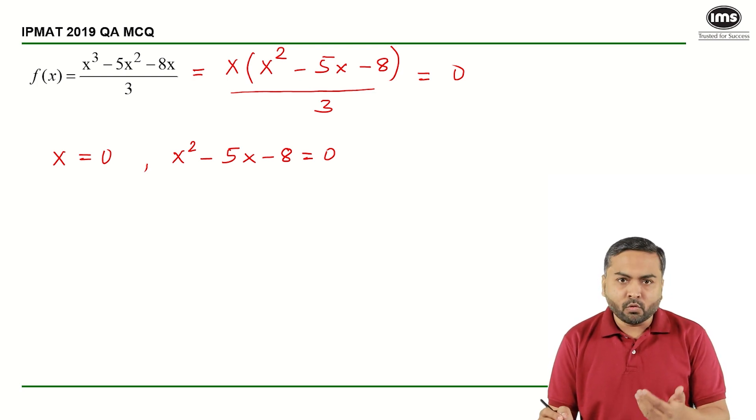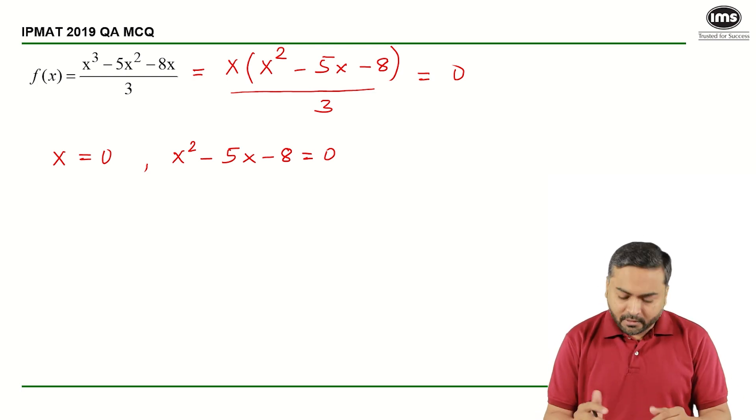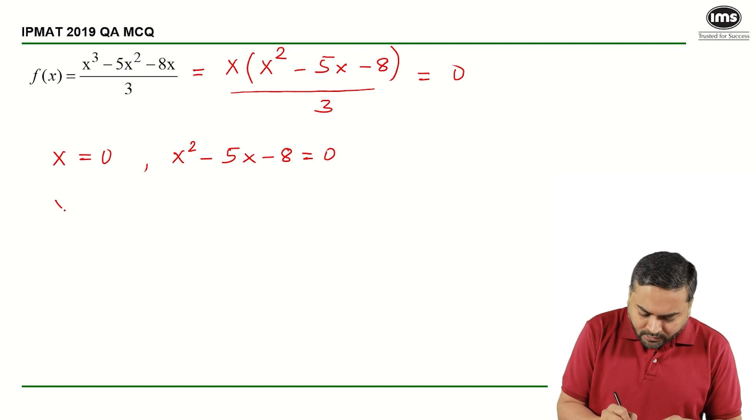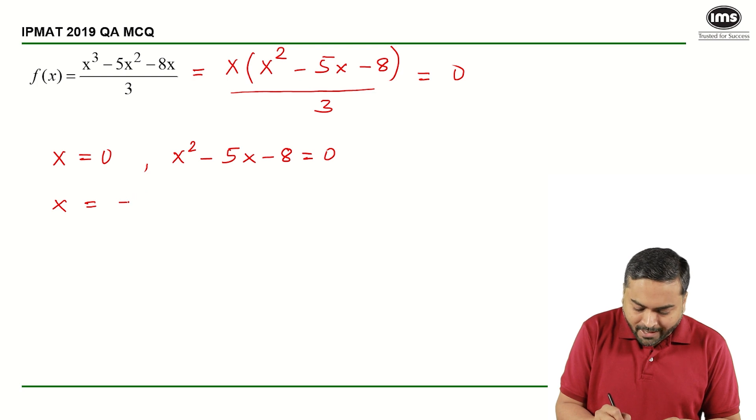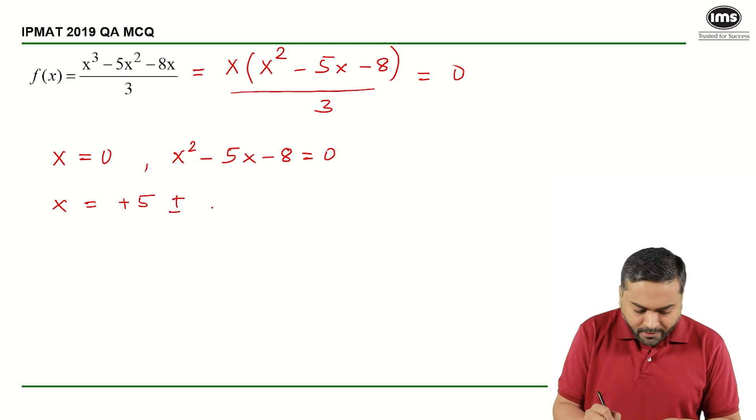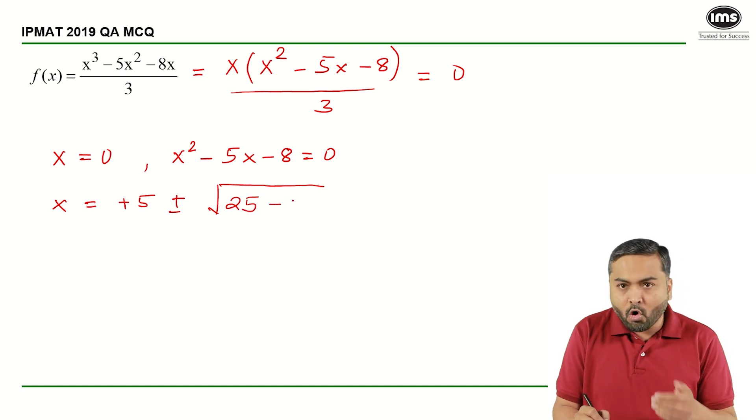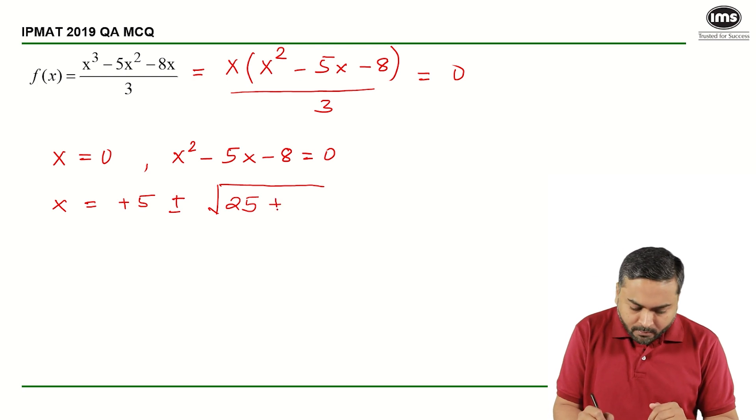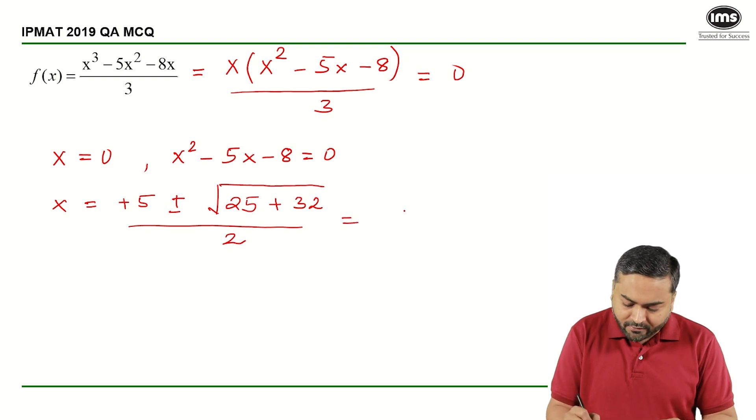Now I will have to use the formula to find out what are the exact roots because we cannot solve this by splitting the middle term. So using the formula, it gives me x is equal to minus of minus 5 that will become plus 5 plus or minus b square. So minus 5 square is 25, b square minus 4ac and c is minus 8, so this will become plus 32 upon 2. So the roots that I have is 5 plus or minus root 57 by 2.